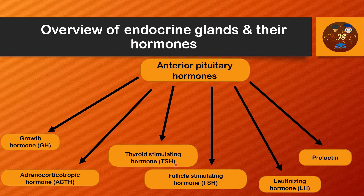The third anterior pituitary hormone is thyroid stimulating hormone, or TSH. It causes the thyroid gland to secrete two hormones: thyroxine and triiodothyronine.